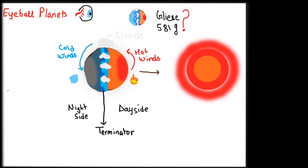The hot side will be dry, the cold side will be frozen, but this area in the middle can harbor life, at least in a primitive form. These exoplanets have been called eyeball planets because of their resemblance to the actual eyeball.